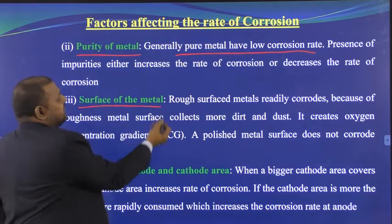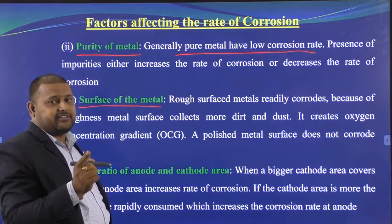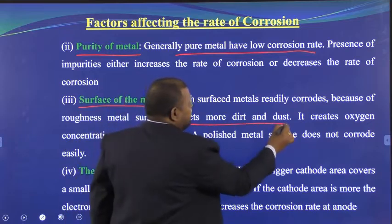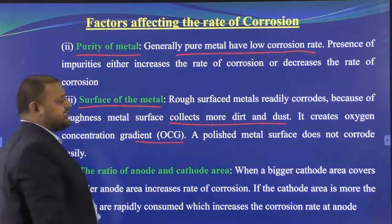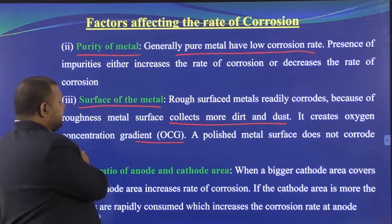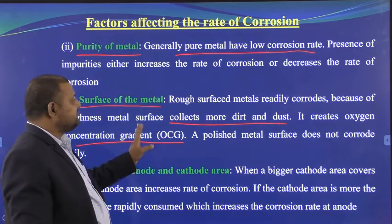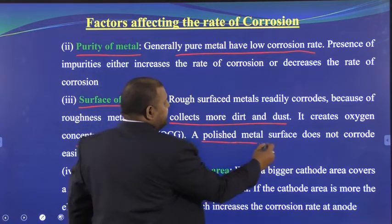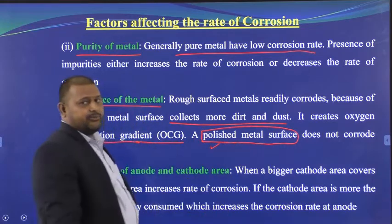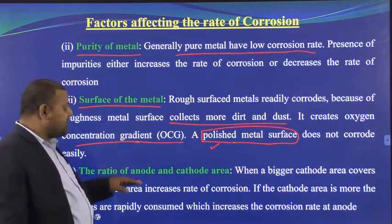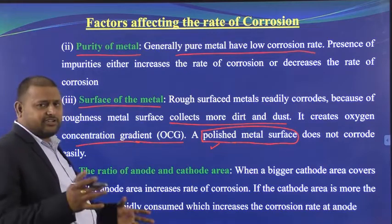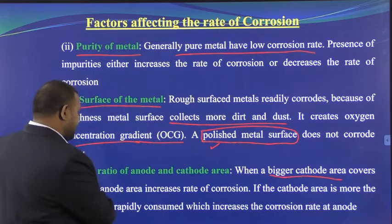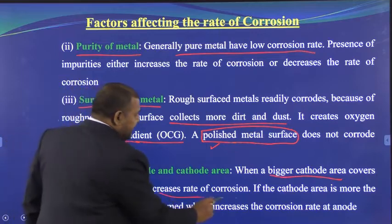The third point is the surface of the metal. A smooth surface resists corrosion, whereas a rough surface can collect dust and create an oxygen concentration gradient, leading to faster corrosion. Polished metal surfaces are non-corrosive. The fourth point is the ratio of anode to cathode area — if cathode area is larger and anode area is smaller, the rate of corrosion increases.